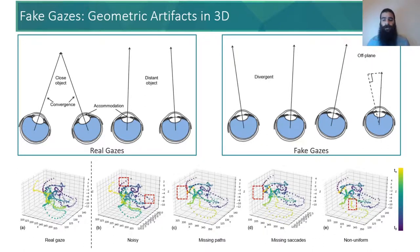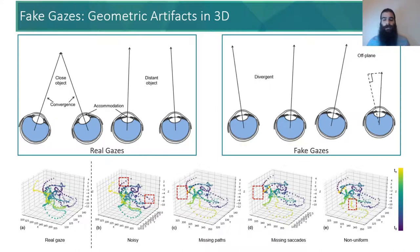In addition, anomalies occur in fake gaze behavior. Normal human gazes either converge near or at distance, excluding some irregular eye conditions, of course. However, fake gazes show divergent or completely off-plane behavior. Moreover, even if the direction is corrected, the continuum of the 3D divergence point is broken, as fake gazes exhibit noise, missing paths, and demonstrate non-uniform distribution.